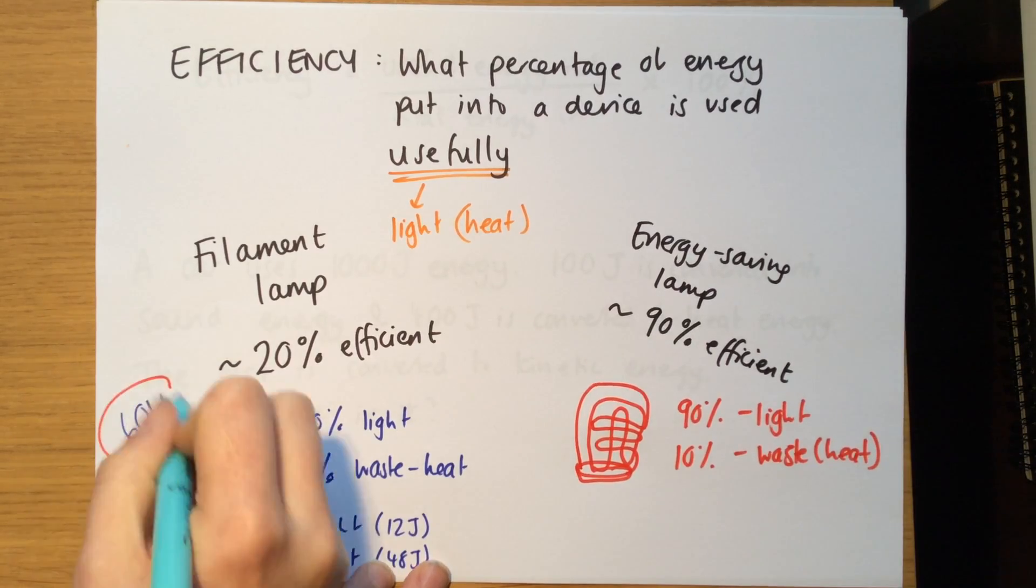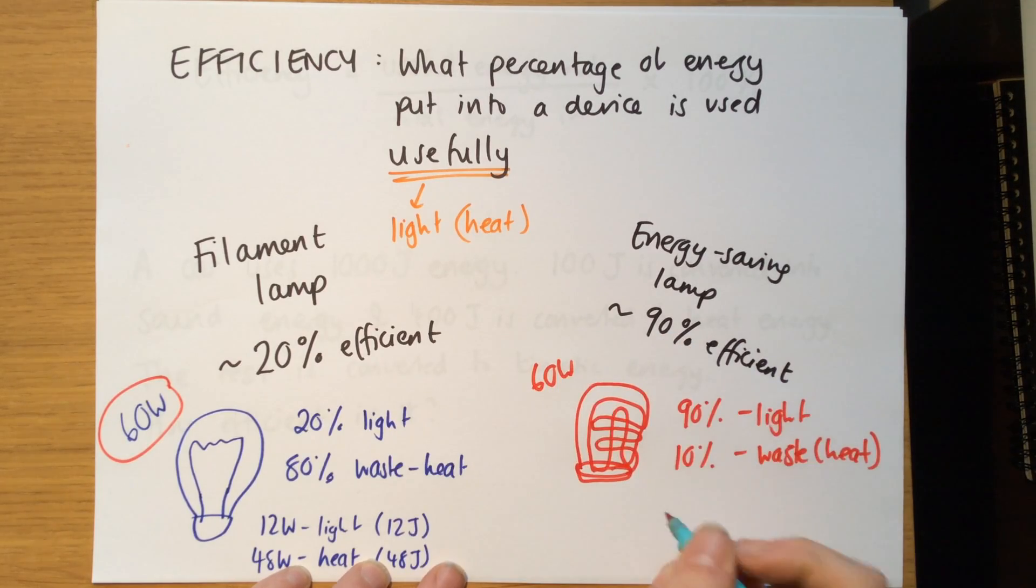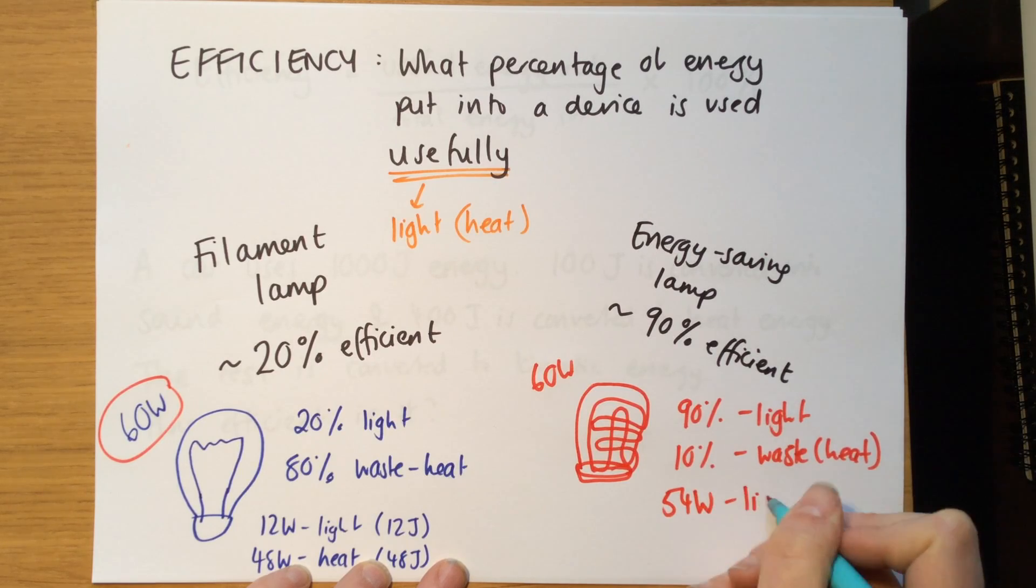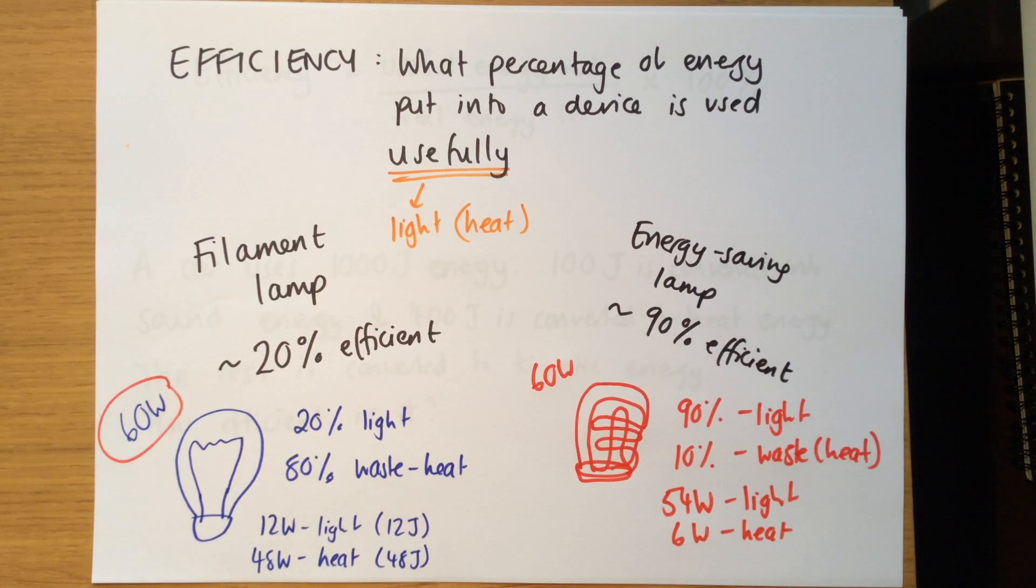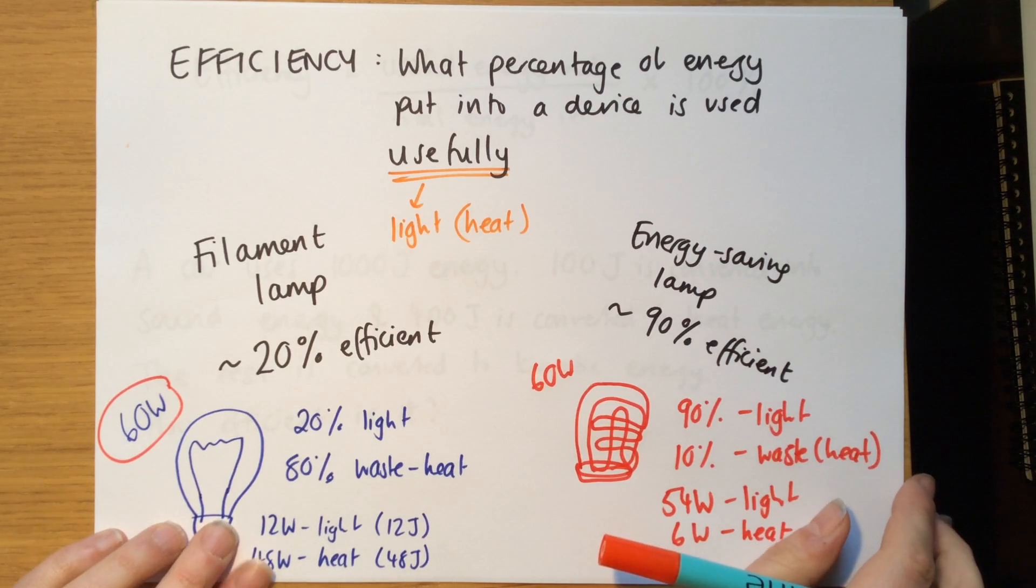So for this same thing, if we had a 60 watt light bulb, 90% of that, so 54 watts, would be converted to light, and only 6 watts would be converted to heat. And that's why normally energy saving light bulbs, you don't have them at such high wattage as you usually get about 12, 20 watts, because you don't need as much, because you're not wasting as much of it.